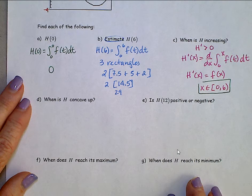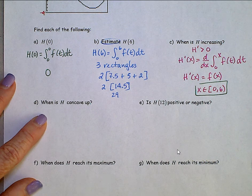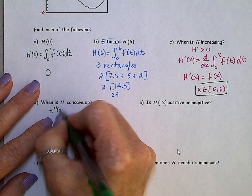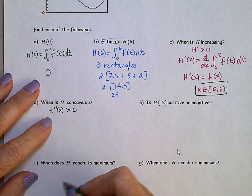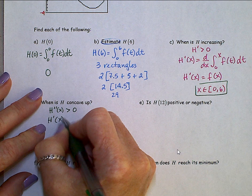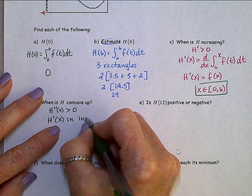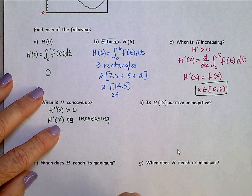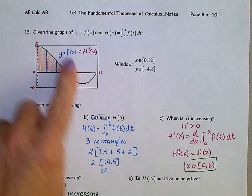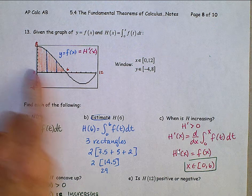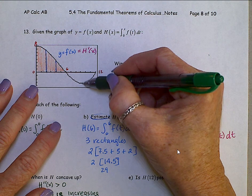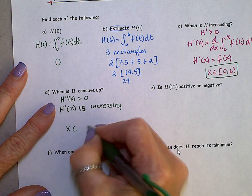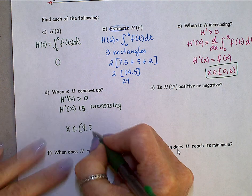Looking at this next one, when is h concave up. In order for h to be concave up, that means that h double prime is greater than 0, which means h prime is increasing. So again, looking back, this is now we can think of as the graph of h prime. When is this graph increasing? Looks like right about here. And that's about 9 1/2. So h prime is increasing when x is between 9 1/2 and 12.